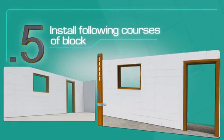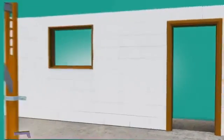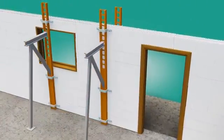Install following courses of block by continuing to overlap the courses so that all the joints are locked both above and below by overlapping blocks.